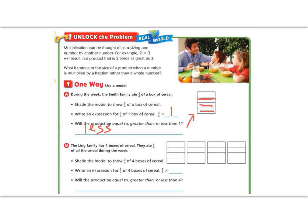The Ling family has 4 boxes of cereal. They ate 3 fourths of all the cereal during the week. Shade the model to show 3 fourths of 4. So now we have 4 cereal boxes — they're each split into 4 — and let's shade 3 fourths of each of them. So our expression would be 3 fourths times 4, because we had 4 whole boxes.